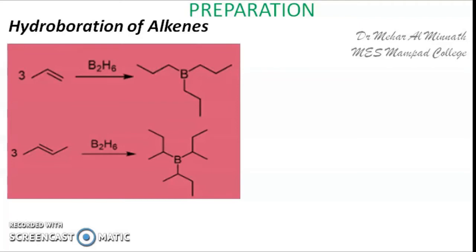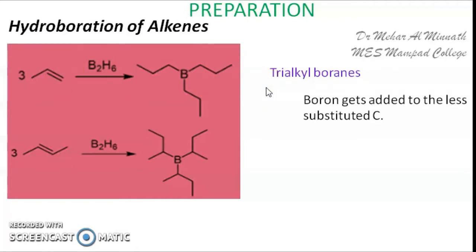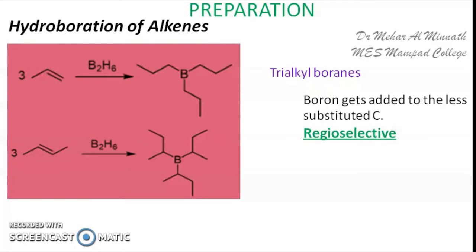If we are using a very bulky alkene, you will get only monoalkyl borane. Now, the boron is getting attached to the less substituted carbon. Remember, boron is electron deficient, so it will prefer an electron-rich site. This makes the hydroboration reaction regioselective, because it is selectively choosing the less substituted carbon, so it becomes a regioselective reaction.